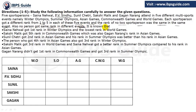Also, no person got the same rank in different events. As I mentioned, if PV Sindhu got first rank in Winter Olympics, she cannot get rank 1 in any other sport. Now let's see the information and how we set up the table. On the left side in the first column, we have the players.